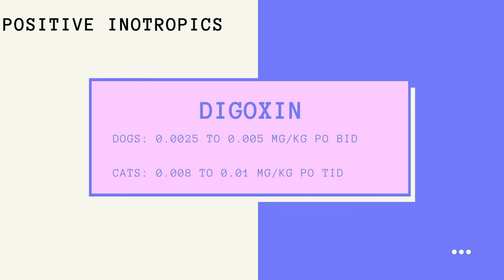Digoxin's adverse effects include heart rhythm disturbances, anorexia, vomiting, diarrhea, depression, reduced kidney function, dehydration, loss of lean muscle mass, low potassium levels, and certain drugs can increase the potential for adverse effects. For these reasons, monitoring the drug's blood concentration is recommended, especially after making a dosage change.